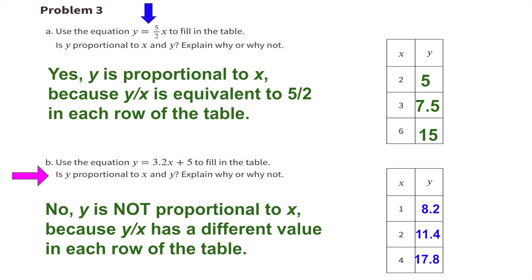For example, looking at the table: when x equals 1, y equals 8.2. If we double the value for x — double 1 to get 2 — but if we double y, double 8.2, we would get 16.4, not 11.4. This confirms the relationship is not proportional.